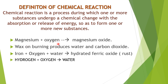Some more examples: magnesium plus oxygen forms magnesium oxide. Wax, which is a compound of carbon and hydrogen, on burning produces water and carbon dioxide — so burning of wax is a chemical change. Whereas heating of wax, when you heat the wax, it turns from solid form to liquid form — that is a physical change.